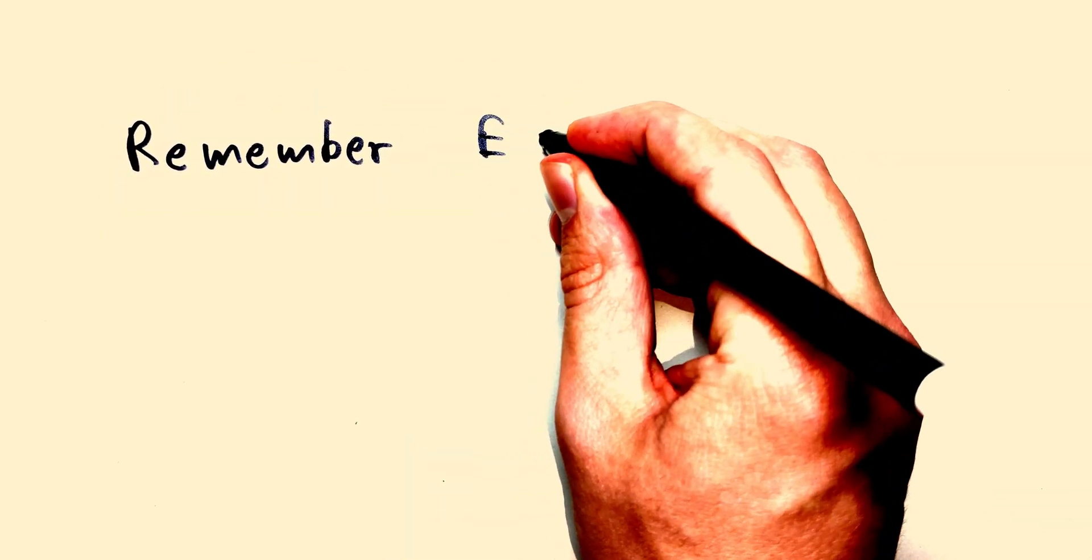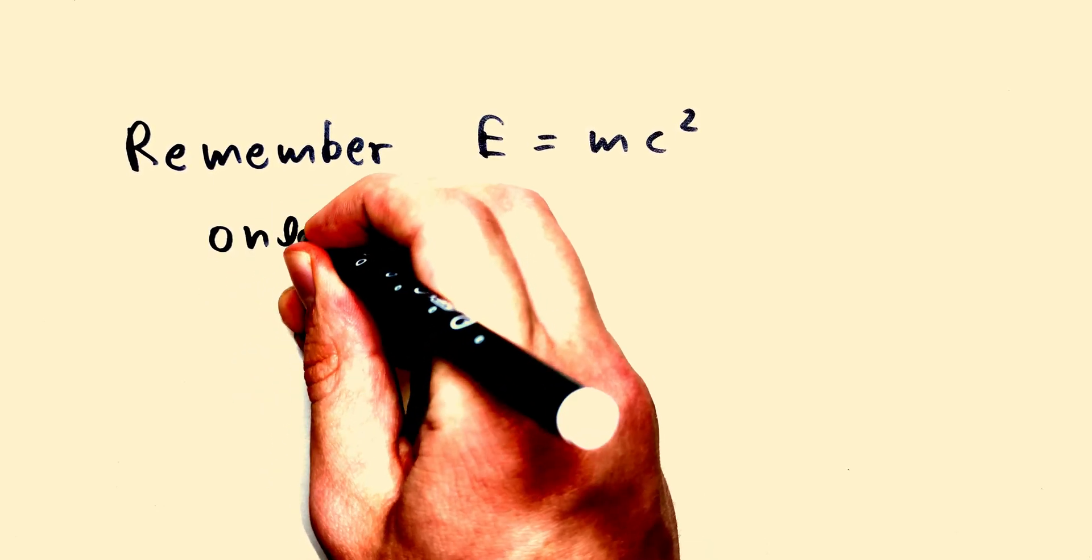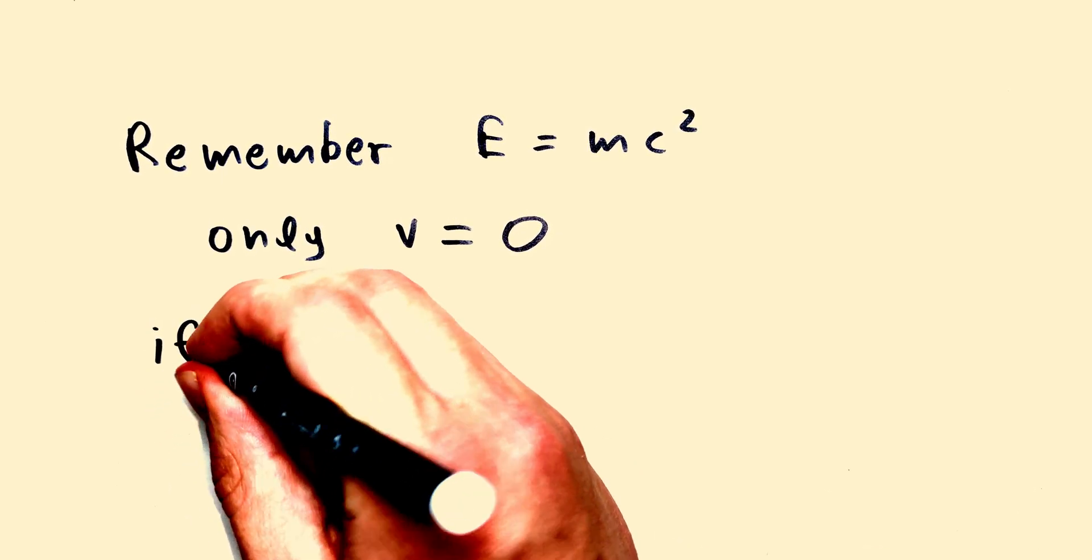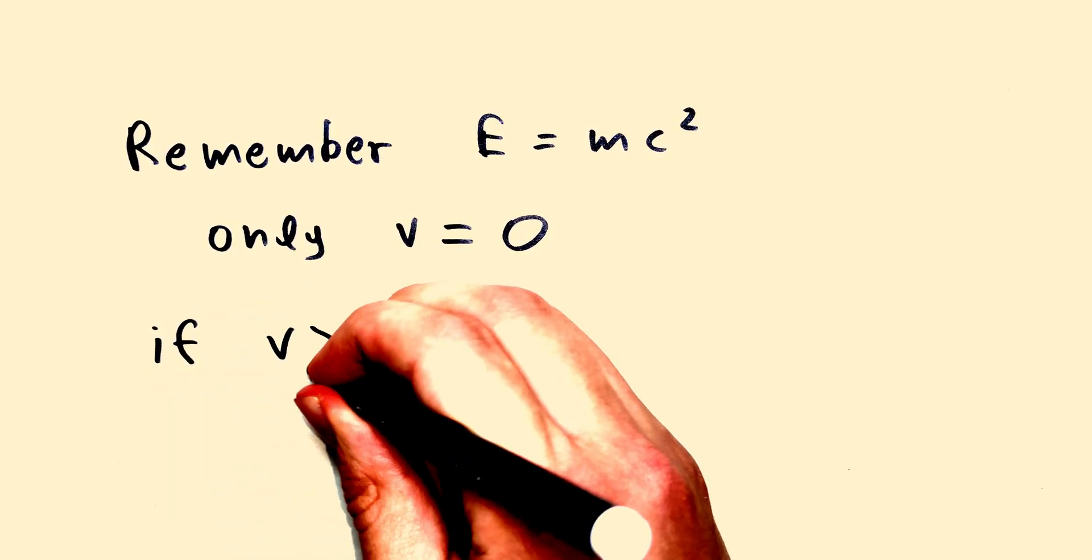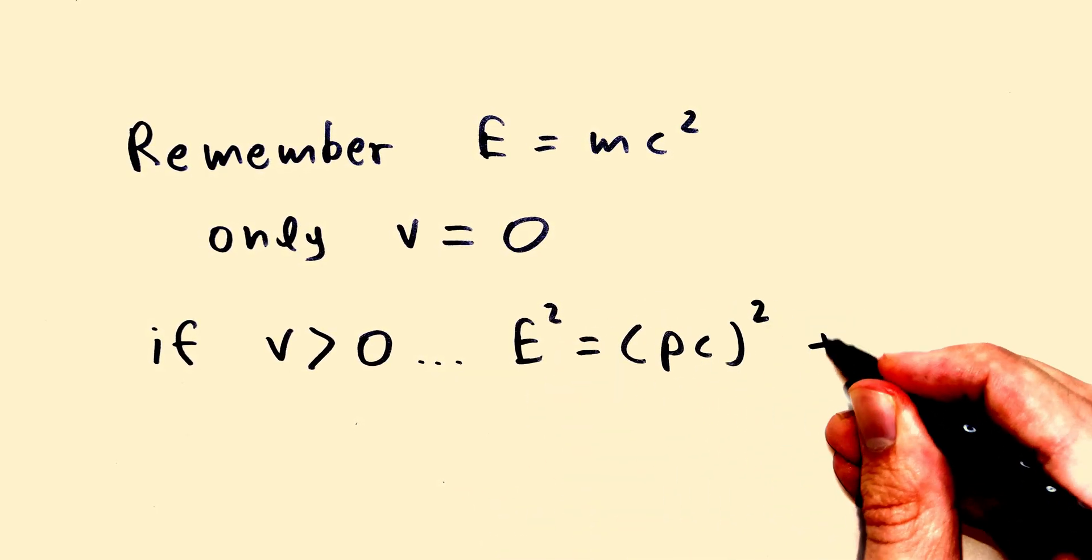Remember E equals mc squared? Well, that is only true when you are not moving. If the object has any velocity larger than zero, then the equation becomes much more complicated.